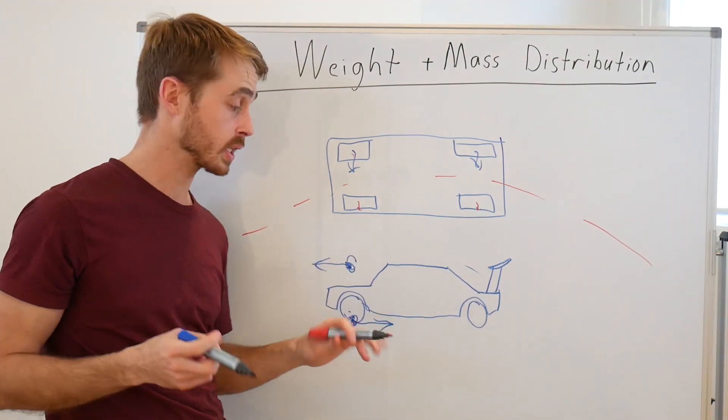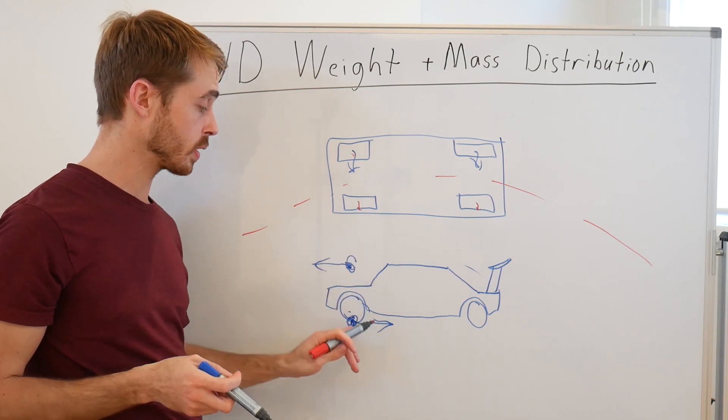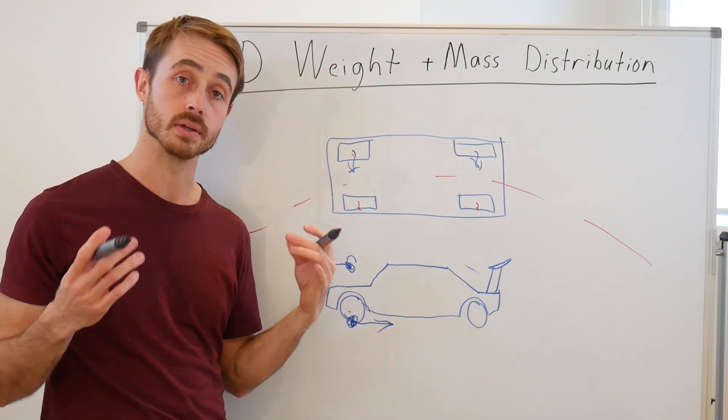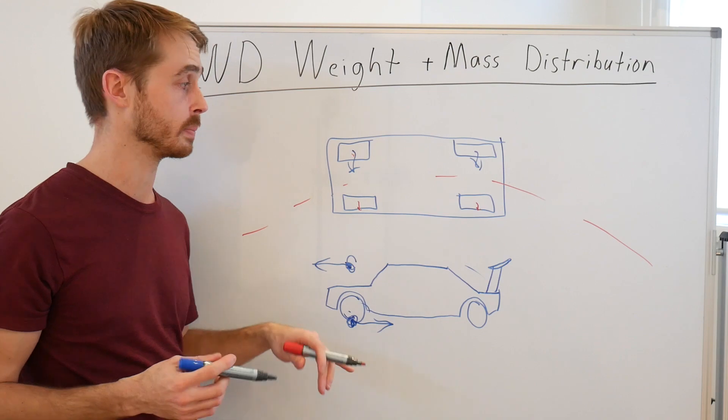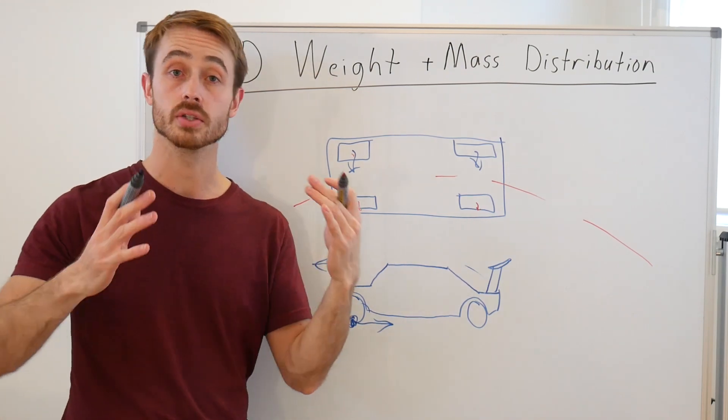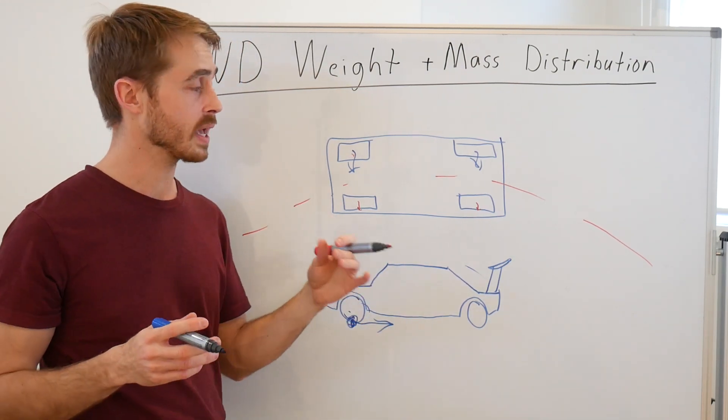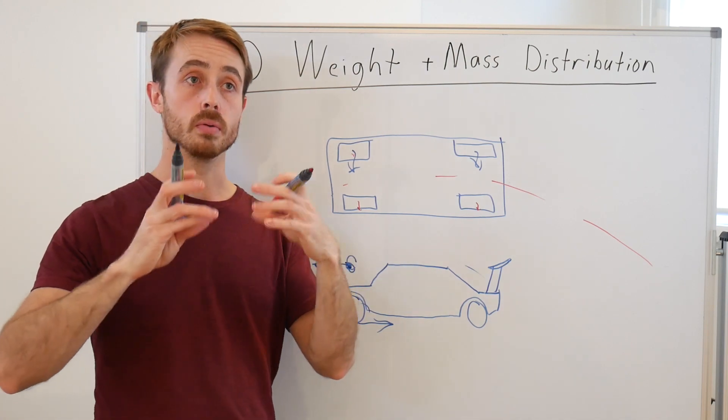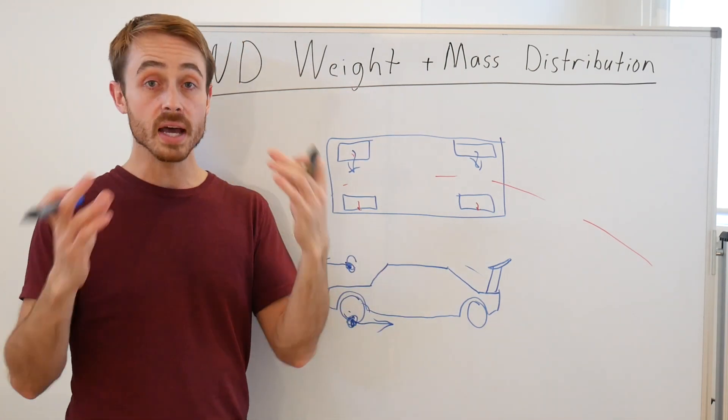So we've now established that theoretically for straight line acceleration we want as much mass over the front wheels as possible, and therefore as much weight on them. But when it comes to cornering that's not quite the case. The first thing that we have to think about is our normal load sensitivity.